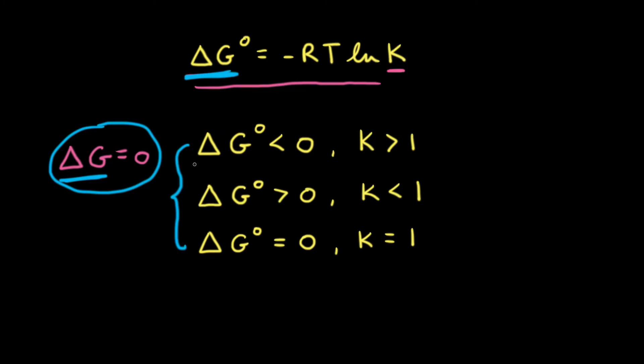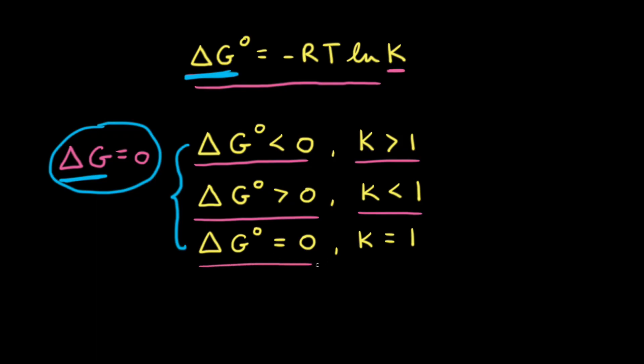If delta G naught is less than zero, K is greater than one, meaning more products than reactants at equilibrium. If delta G naught is greater than zero, K is less than one, meaning more reactants than products at equilibrium. And when delta G naught equals zero, K equals one, meaning significant amounts of both reactants and products at equilibrium.